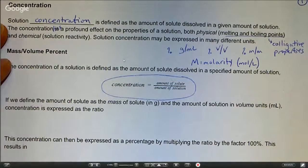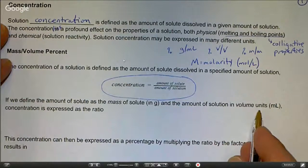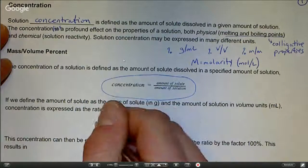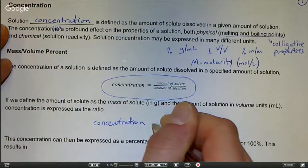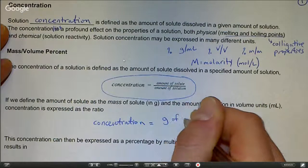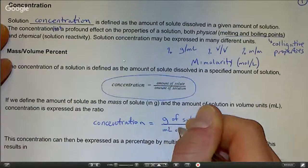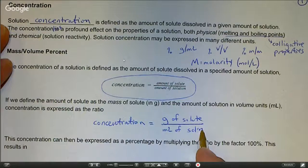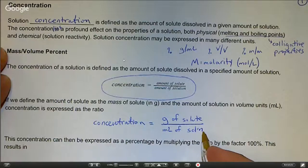If we define the amount of solute as the mass of the solute in grams, and the amount of solution in volume units, milliliters, concentration can be expressed as the following ratio. We'd say concentration equals grams of solute over milliliters of solution. I usually use this shorthand version.